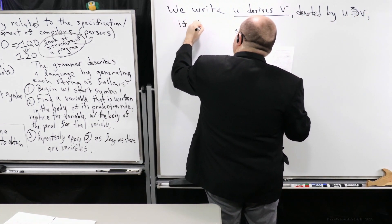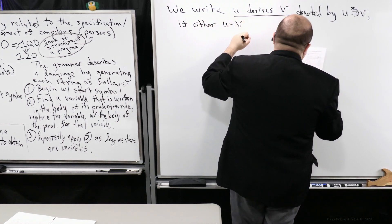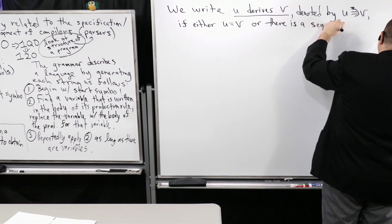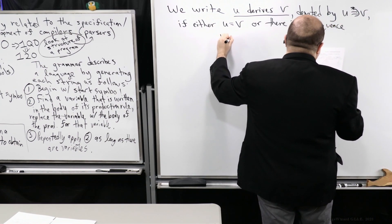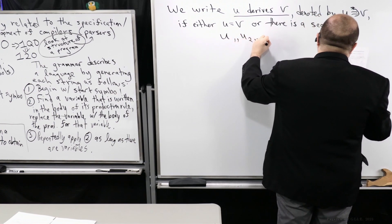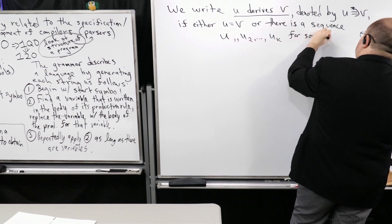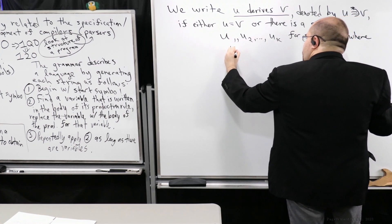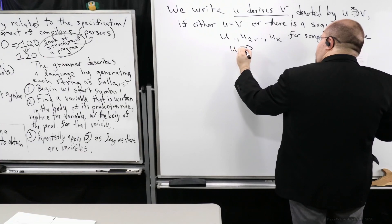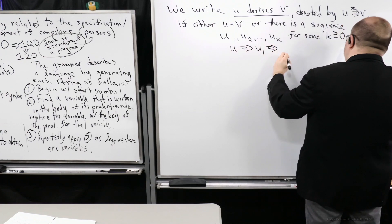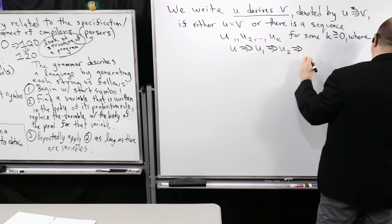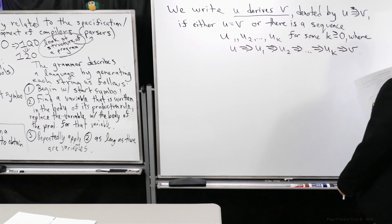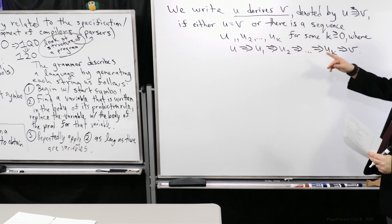U derives star V if either U equals V (the exact same string), or there is a sequence U1, U2, all the way up to Uk for some k ≥ 0, where applying a production rule to U gives U1, then U2, and so on, until I get to Uk and then V. So there's got to be a sequence of production rules that gets me from U to V.